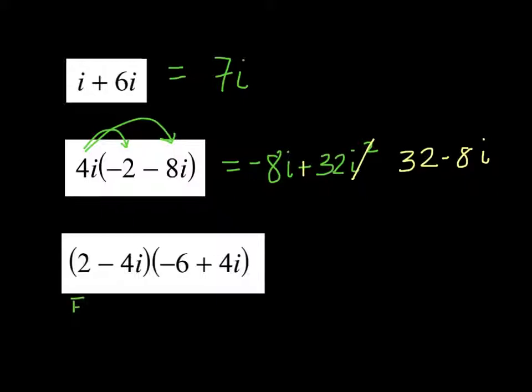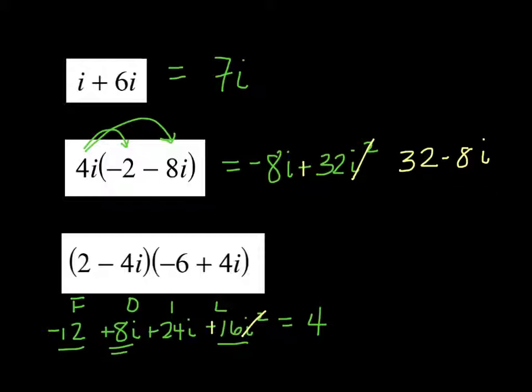And then this one is just like you use FOIL, just like you would if you were multiplying out with real numbers. So 2 times negative 6 is negative 12. Outer is 2 times plus 4i, so plus 8i. Minus 4i times minus 6, so plus 24i for the inner product. And minus 4i plus 4i. When we multiply them, we get minus 16i squared. All right, simplify. Negative 12, so I have a negative 12 plus 16. Negative 12 plus 16, positive 4. Plus 8i, plus 24i is going to be plus 32i. And there you go. 4 plus 32i simplified.